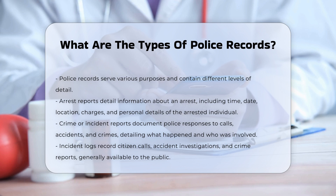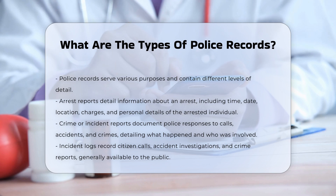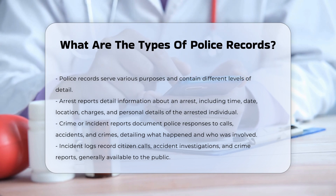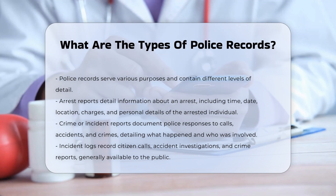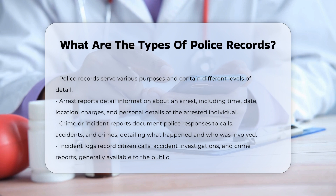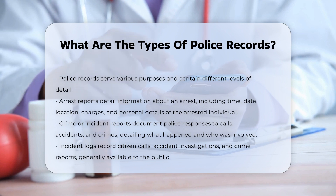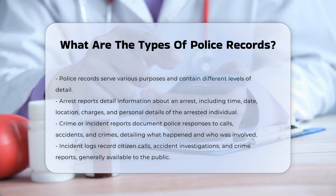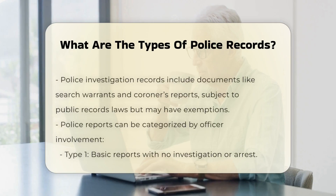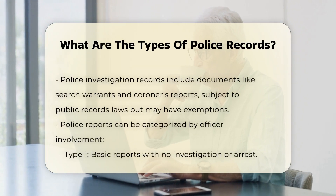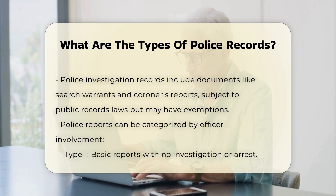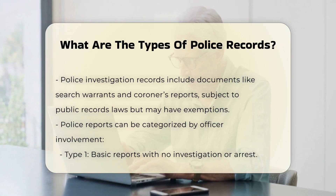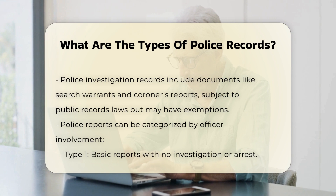Crime or incident reports. Crime or incident reports document police responses to citizen calls for assistance, reports of accidents, or reports of crimes being committed. These reports capture what happened, who was involved, and any actions taken by the police. They can include incident reports for non-violent offenses, missing persons, and other types of incidents where no arrest was made.